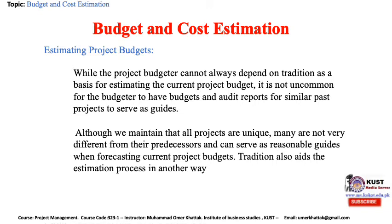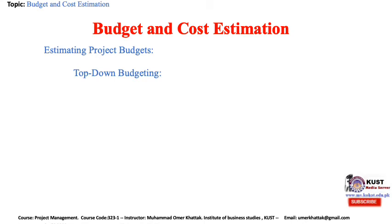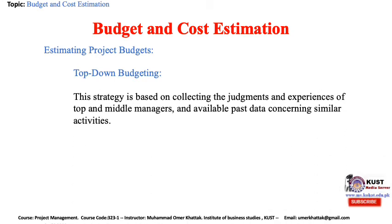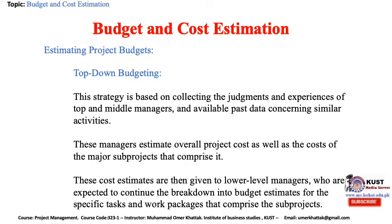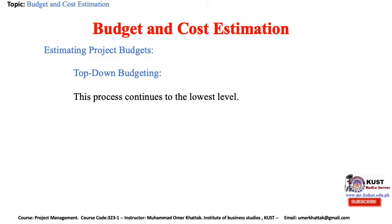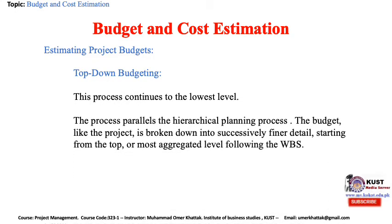There are two fundamentally different strategies for data gathering: top-down and bottom-up budgeting. Top-down budgeting is based on collecting the judgment and experience of top and middle managers, along with available past data concerning similar activities. These managers estimate overall project cost as well as the cost of major sub-projects. These cost estimates are then given to lower-level managers, who continue the breakdown into budget estimates for specific tasks and work packages. The process continues to the lowest level, paralleling the hierarchical planning process — the budget is broken down into successively finer details following the WBS.